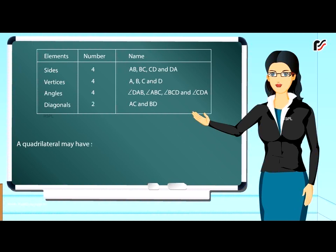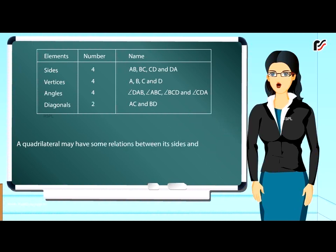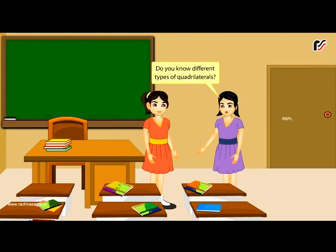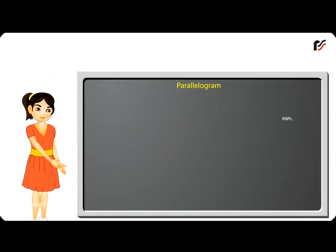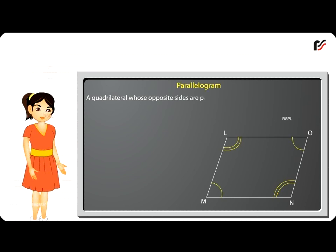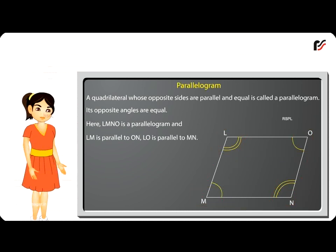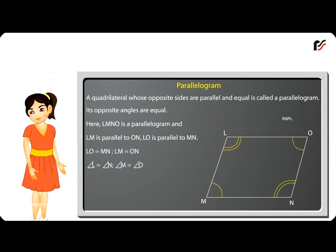Types of quadrilaterals. Parallelogram: A quadrilateral whose opposite sides are parallel and equal is called a parallelogram; its opposite angles are equal. Here, LMNO is a parallelogram where LM is parallel to ON, LO is parallel to MN, LO = MN, LM = ON, angle L = angle N, and angle M = angle O.